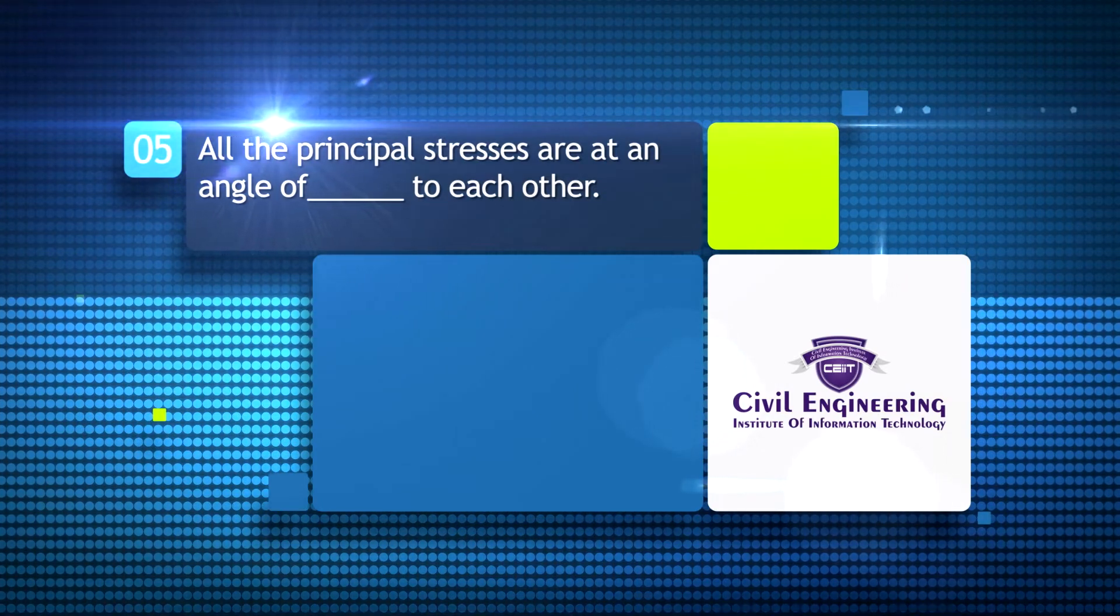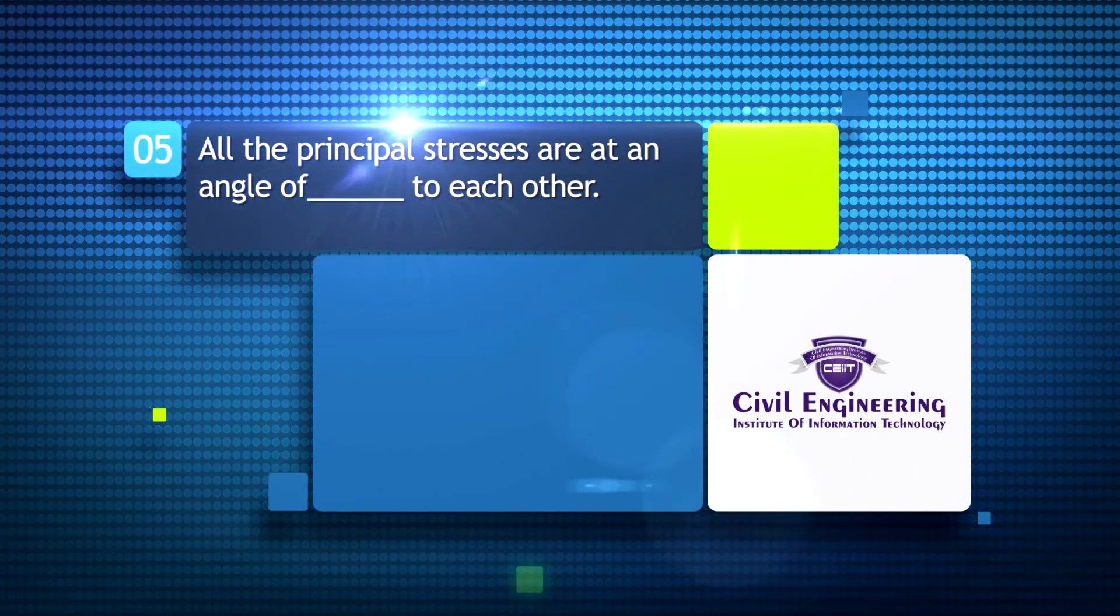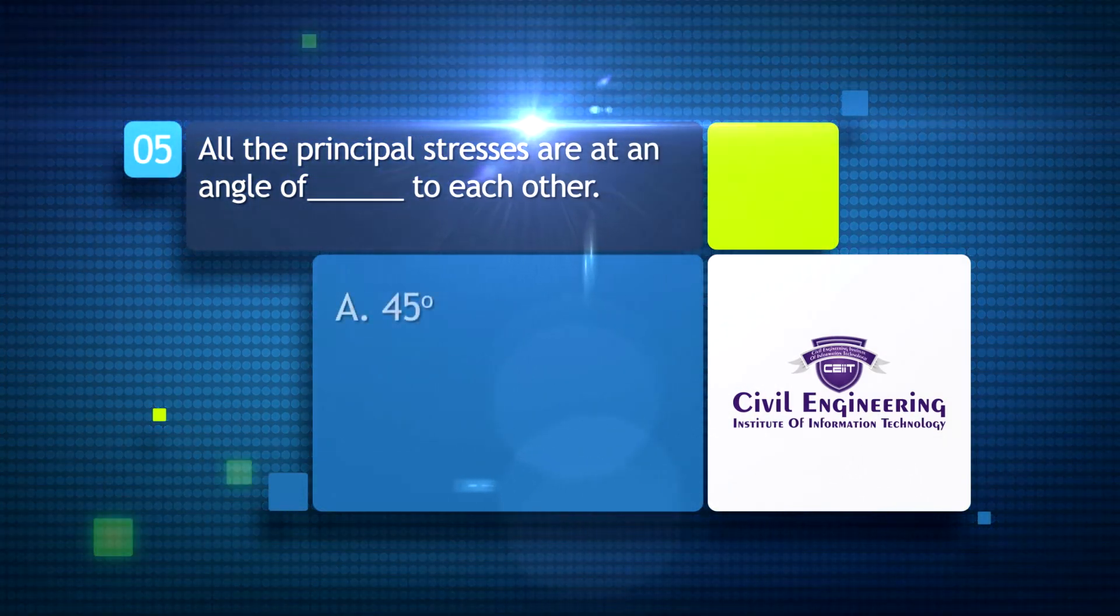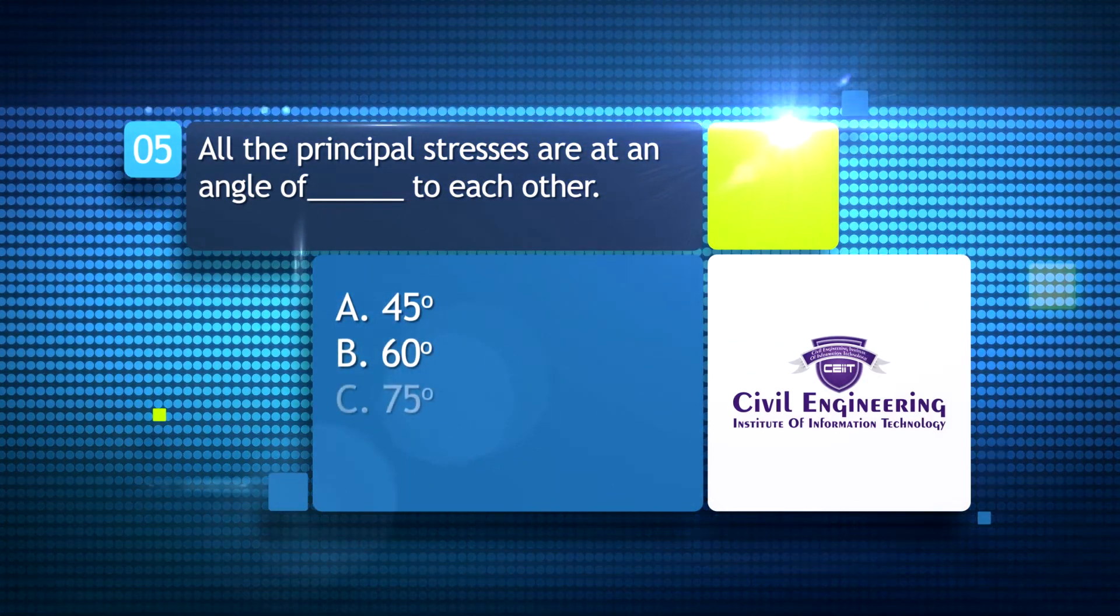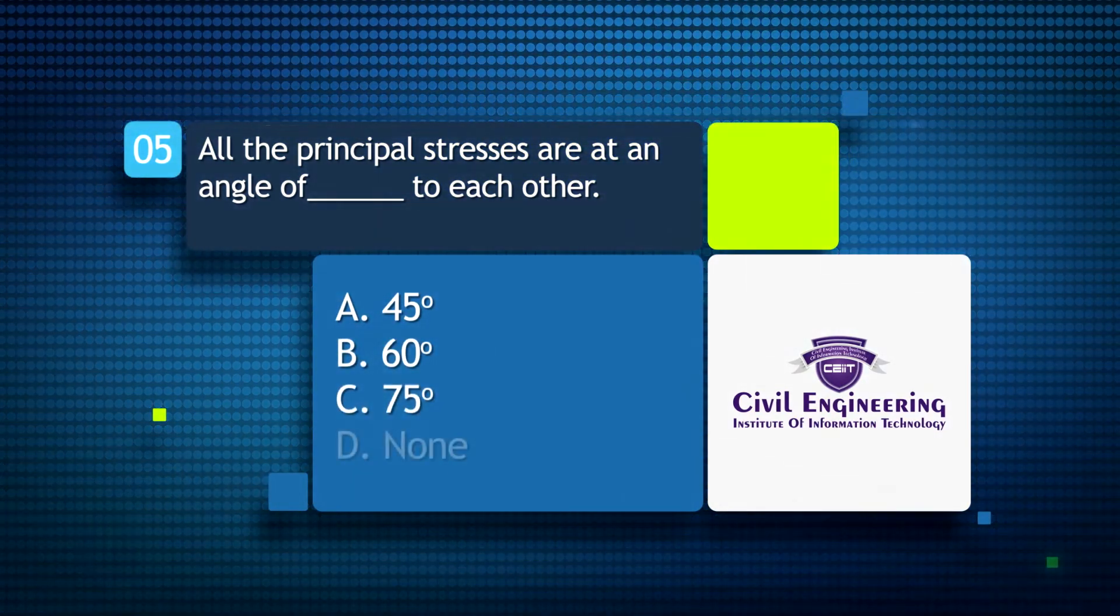All the principal stresses are at an angle of ___ to each other: A. 45 degree, B. 60 degree, C. 75 degree, D. none.